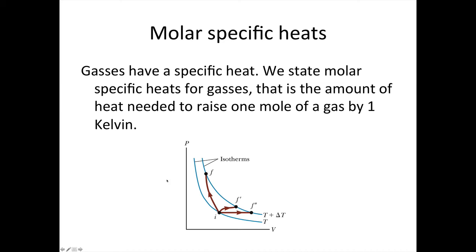So let's consider this PV plot here. What we've got is an initial state and a variety of different final states. So there's different paths we can take here, shown in the kind of reddish color, to get to different final states. Now, because these final states are all along the same isotherm at a temperature T plus delta T, we know that they've all got the same temperature. And they've all come from the same initial state.